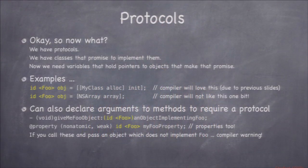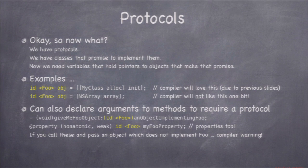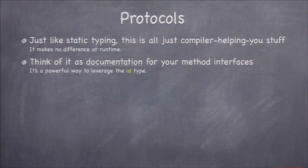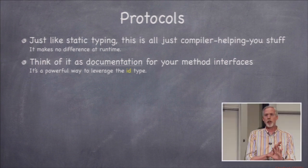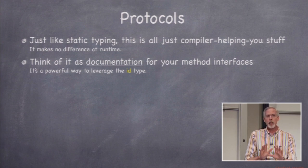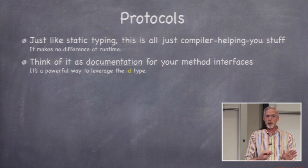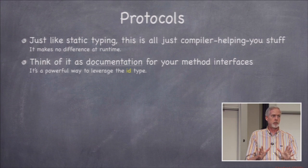In addition to local variables, you can pass these protocol-typed IDs around as arguments to methods and as properties. It's really just another type — not quite NSString star where you know the exact class, but not quite a plain ID where you know nothing. It's in between. And like static typing, this is all just syntactic sugar in the compiler — it makes absolutely no difference at runtime and no code is generated differently because of protocols.